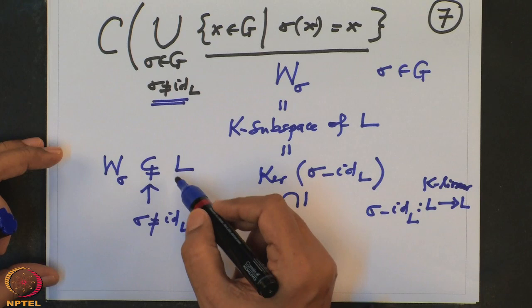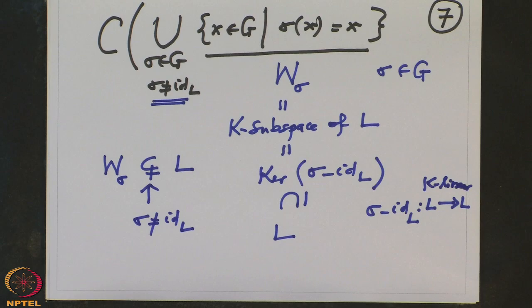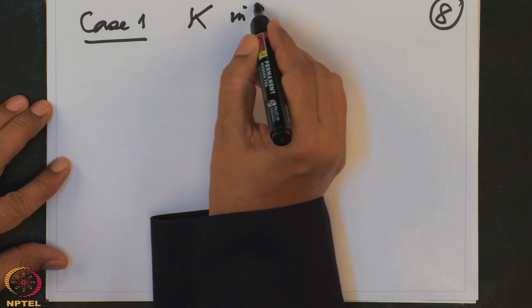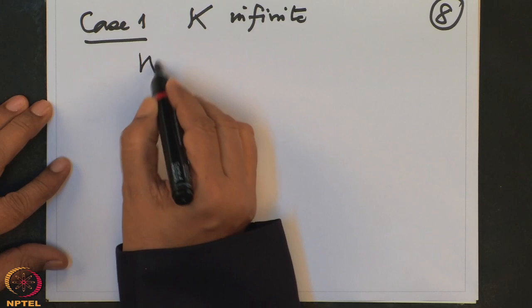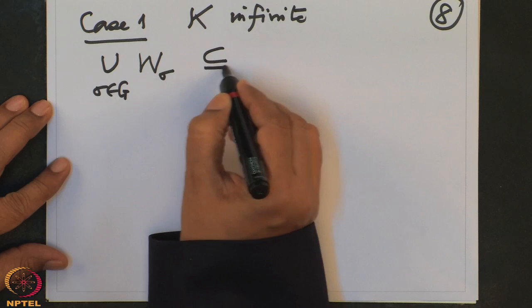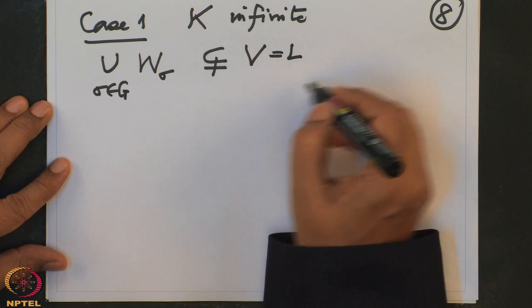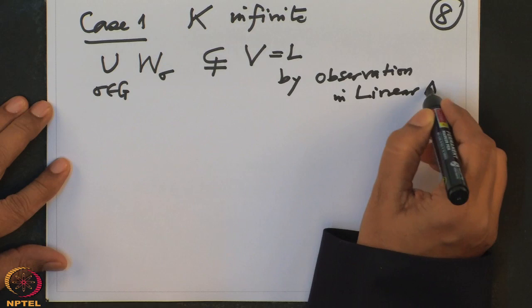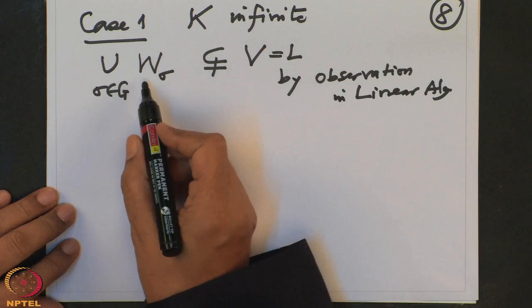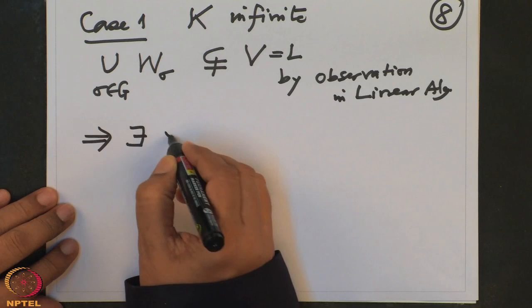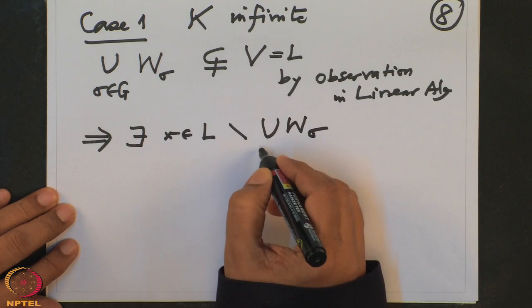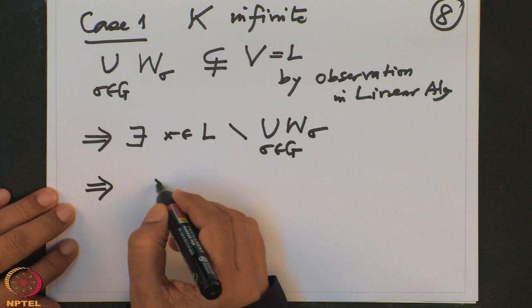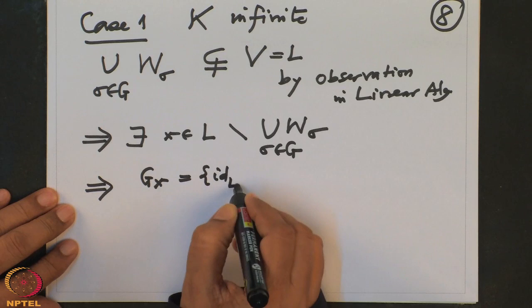Case 1: K is infinite. Then by the linear algebra observation, the union of all W_sigma (sigma in G, sigma not identity) is a proper subset of L. Therefore there exists X in L which is not in the union of any W_sigma. By definition, the isotropy at this X is the identity only, completing the proof for the infinite case.